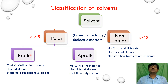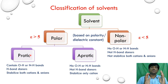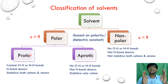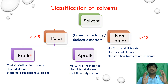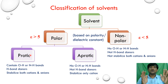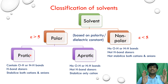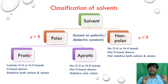In the case of protic solvents, we have NH and OH bonds. They can release H+ ions, form hydrogen bonding, and they can solvate both cations and anions, stabilizing both.